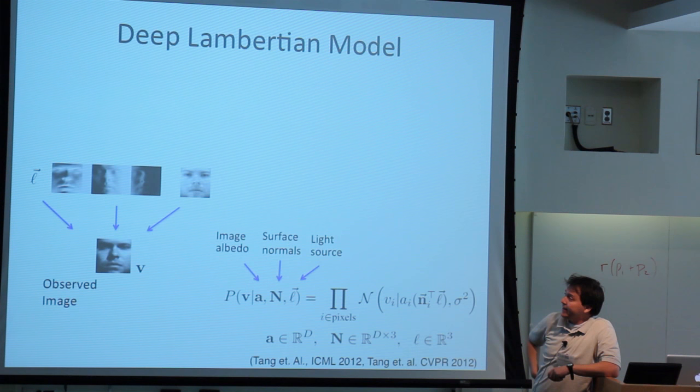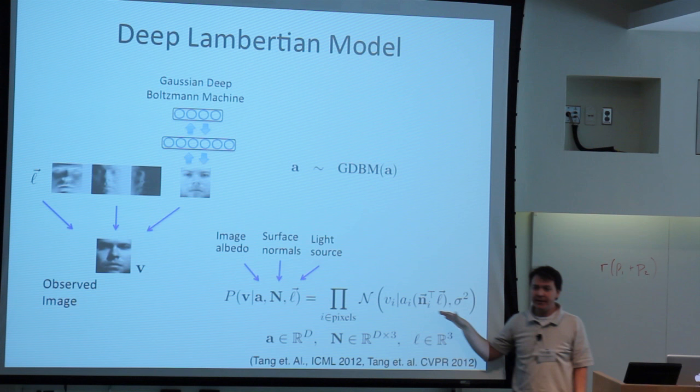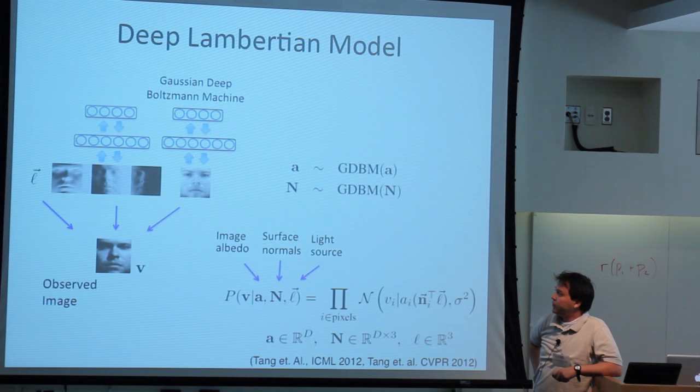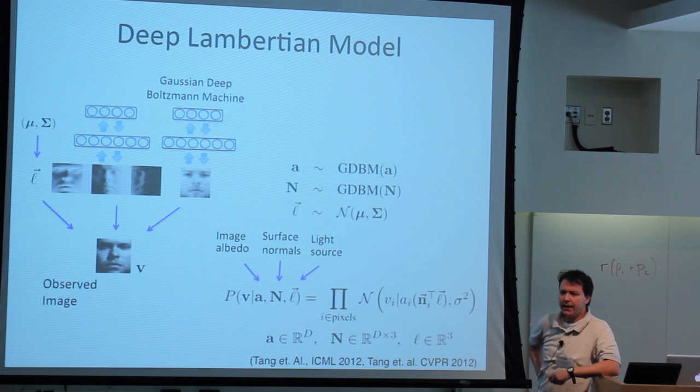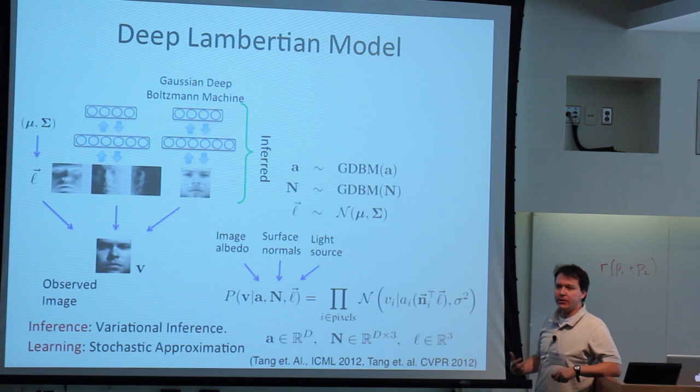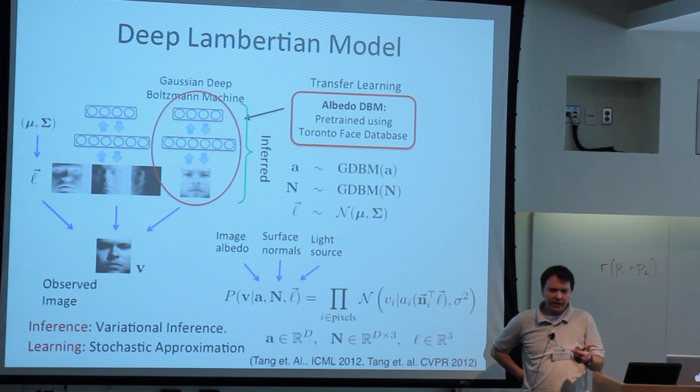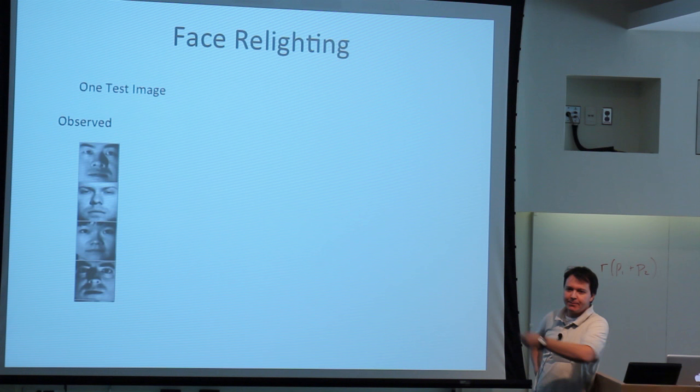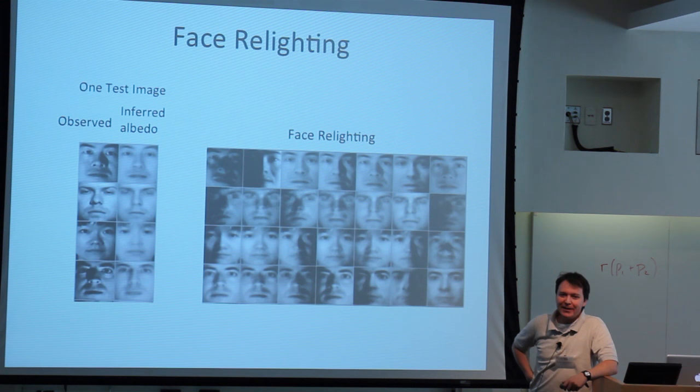We can do that by putting prior knowledge into the architecture. This is basically a Lambertian model, but we can put interesting priors on the albedo versus surface normals or the light direction. By adding a little prior knowledge, we can build models that extract meaningful representations from the data. Given a single test image the model was never trained on, we can infer the image albedo and do things like face relighting.